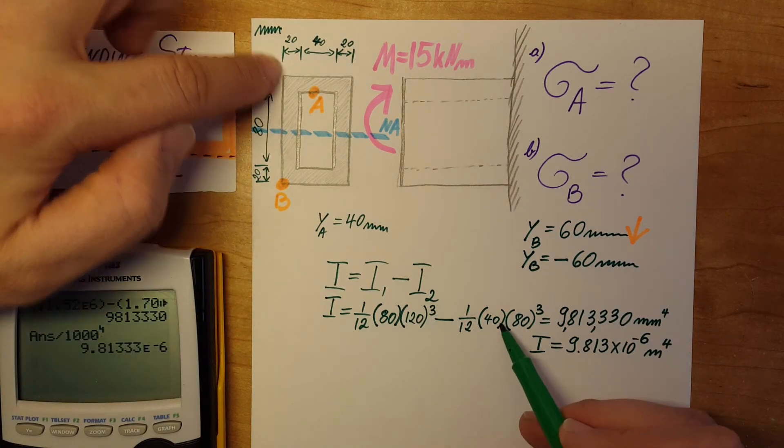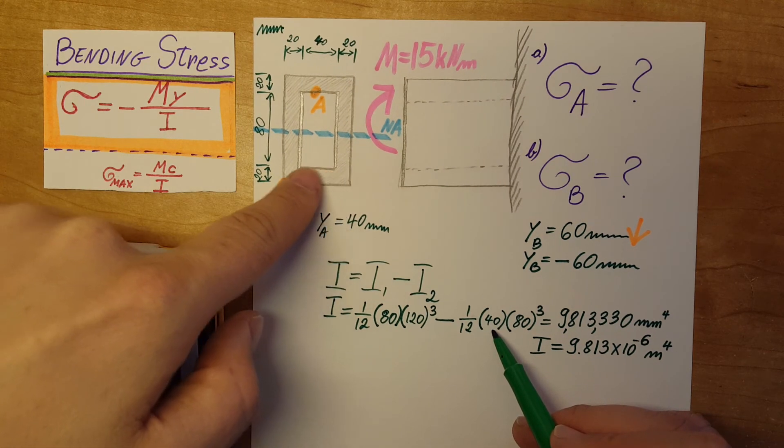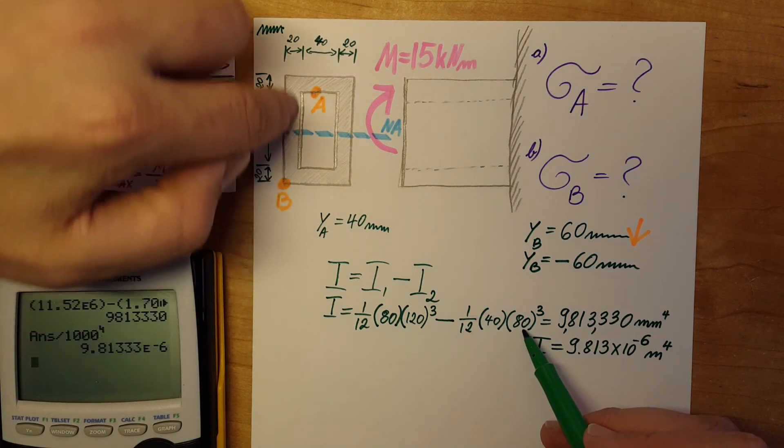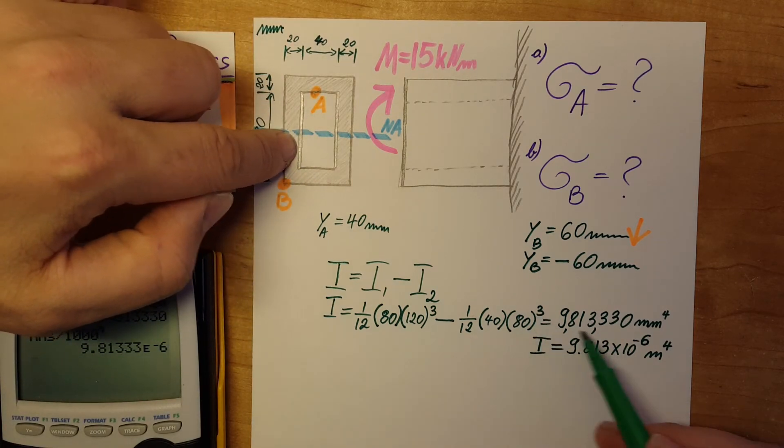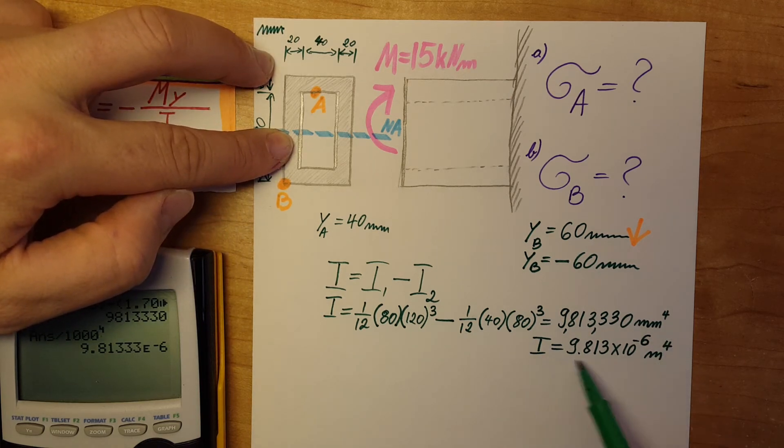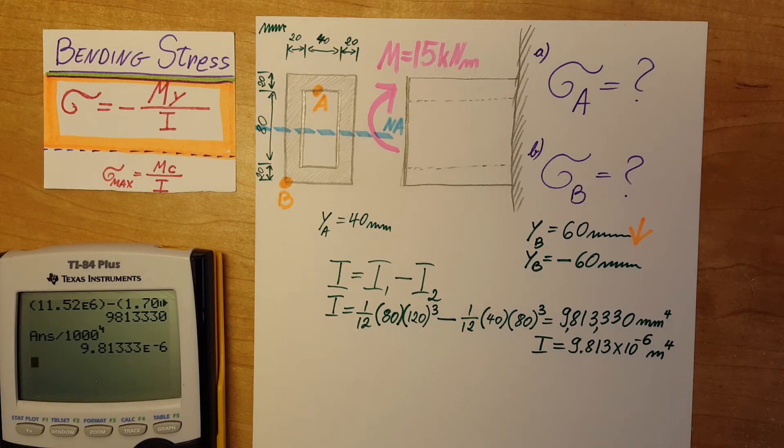Minus 1 over 12. Now the small rectangle, the 40, the inside, times 80, the height of the interior to the cube, which will give us this value, and then convert it to meters, 9.81 times 10 to the negative 6 meter to the fourth.